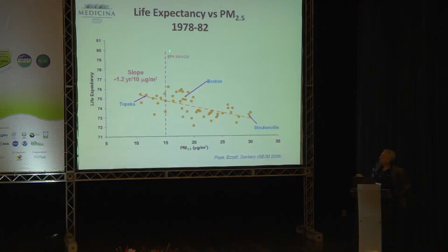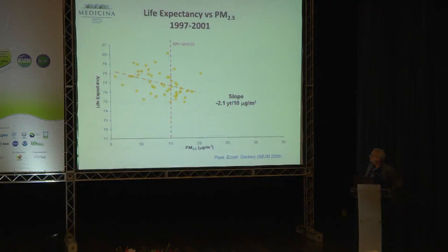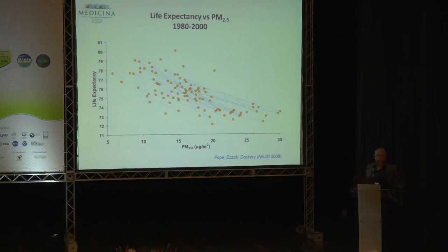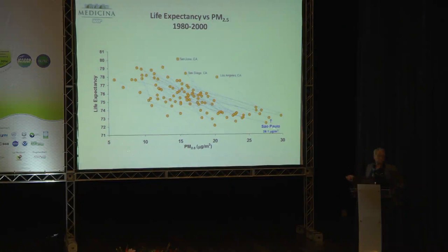For this reason, the EPA set the standard at 15 micrograms per cubic meter, as apparently there is no effect below that level. Then cities did their homework — pollution decreased, but the slope was still there. When you plot two time periods, the tendency is much more evident. Every city that cleaned its air increased life expectancy. Sao Paulo is currently where Los Angeles was in 1958.